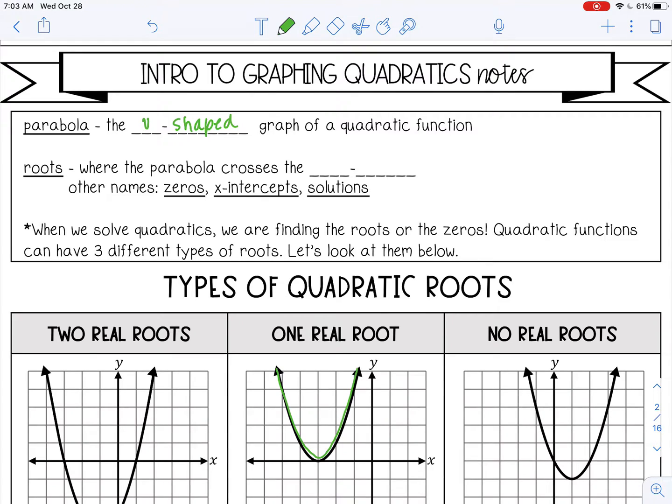Roots are where the parabola crosses the x-axis, and other names for those are zeros, or x-intercepts, or solutions.